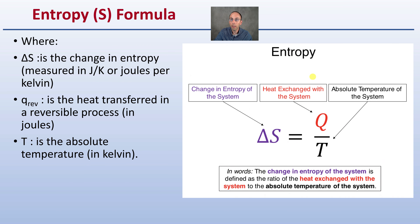That's where the temperature unit Kelvin becomes important, and being able to convert to that unit is also equally important. Changes in delta S, or entropy, indicate whether a process increases or decreases the disorder in a system.